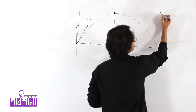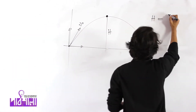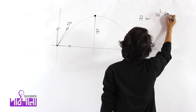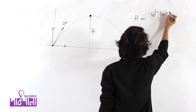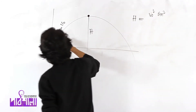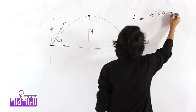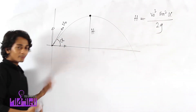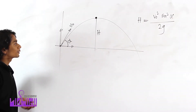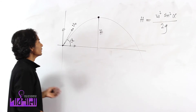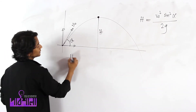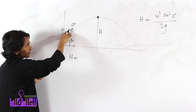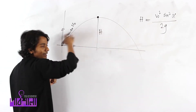The answer is H equal to v naught squared sin squared alpha divided by twice g. Let's write the answer: H equals v naught squared sin squared alpha divided by 2g.